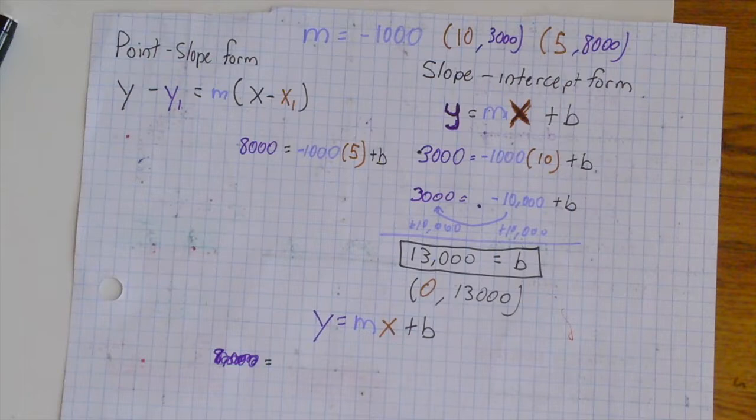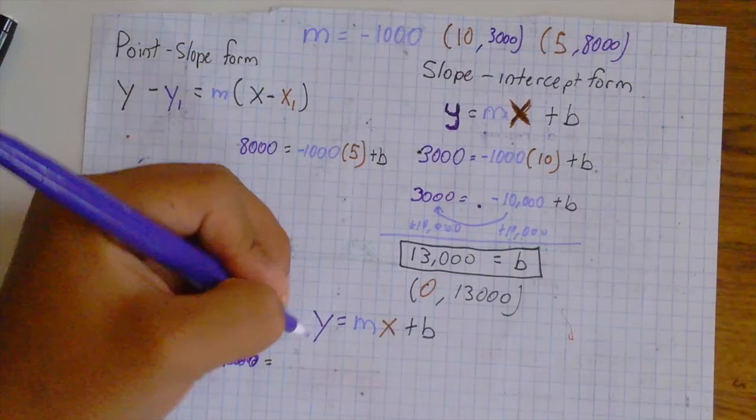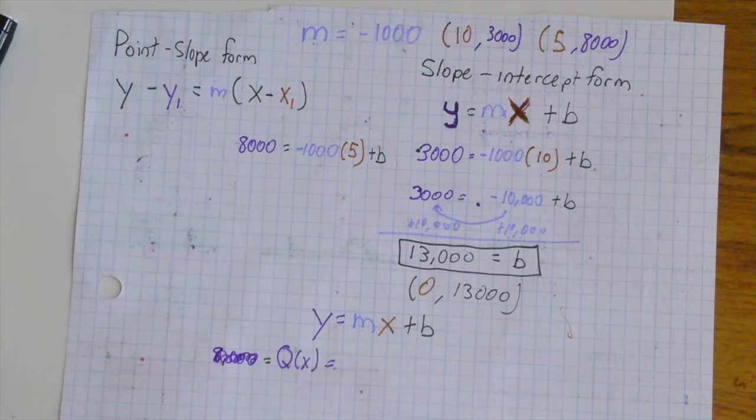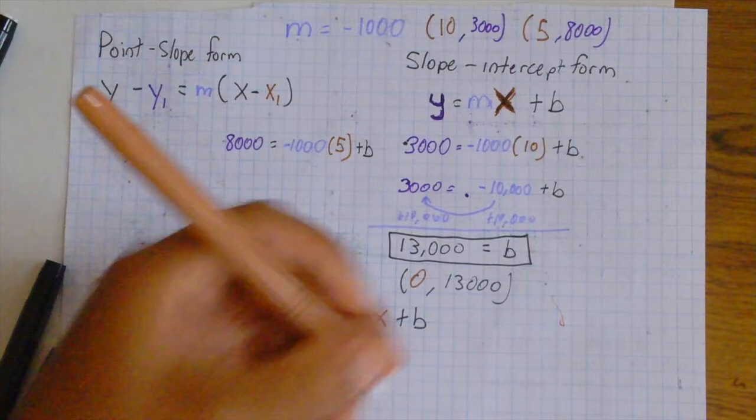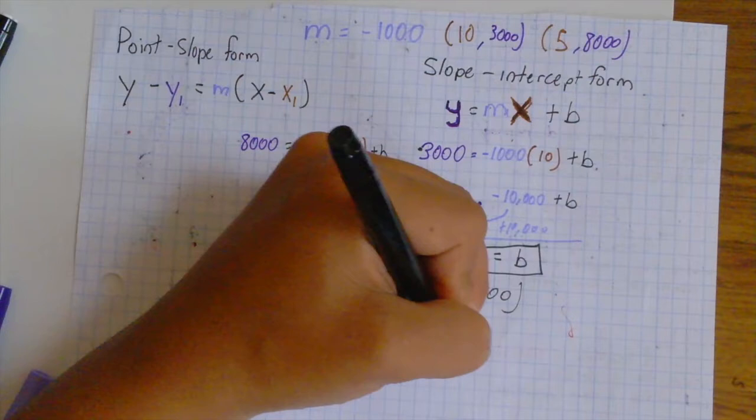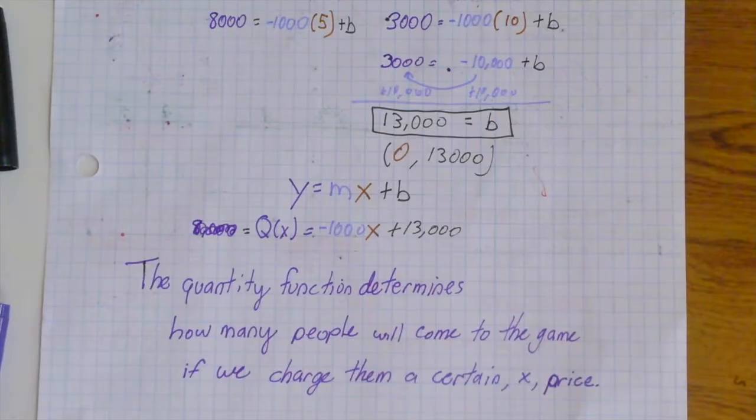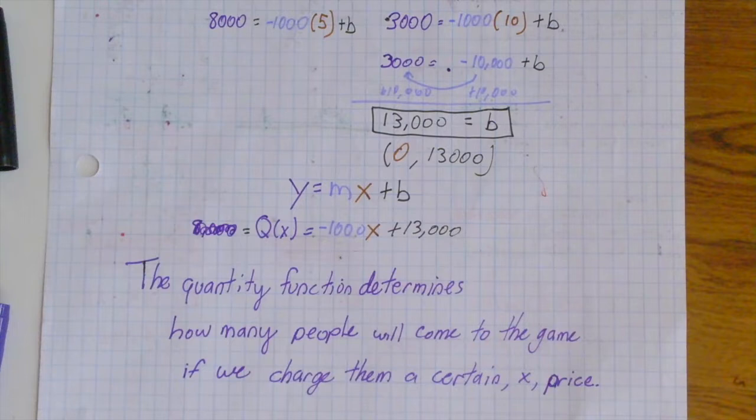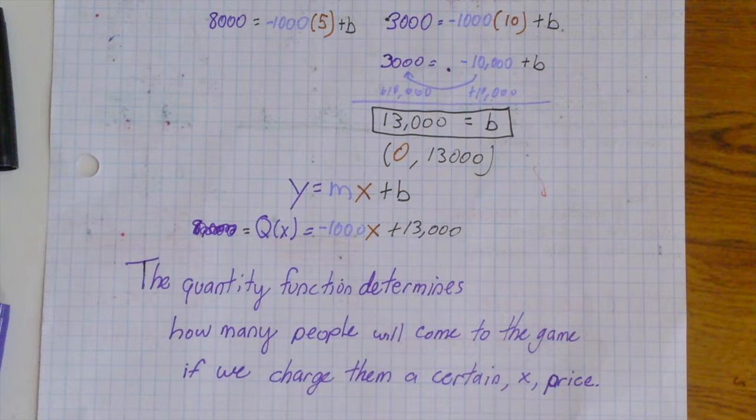So y is going to be our Q(x), our quantity function, which is what we were looking for all along. Our slope, negative 1,000 with the x variable, plus 13,000. This is how much our initial cost will be. Realizing our linear function, using the slope intercept form, we have Q(x) equals negative 1,000x plus 13,000. Therefore, the quantity function determines how many people will come to the game if we charge them a certain x price. You now have enough information to answer part A for both questions in problem set A and problem set B.